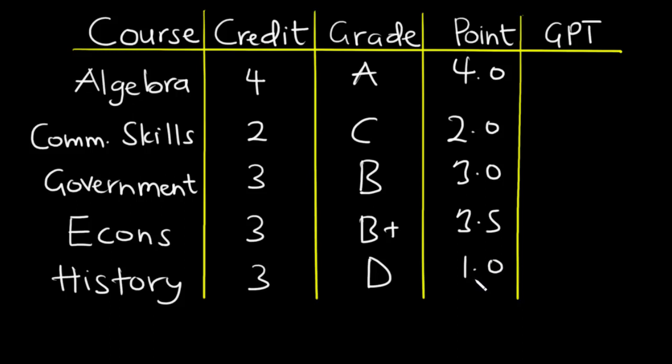So the next thing to do is to calculate the grade point or the quality point. To do this, you just need to multiply the credit by the point for each grade. So 4 times 4 is 16, 2 times 2 is 4, 3 times 3 is 9, 3 times 3.5 is 10.5, and then 3 times 1 is 3.